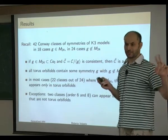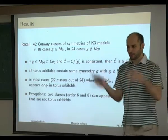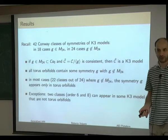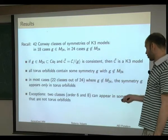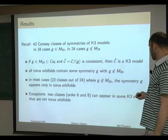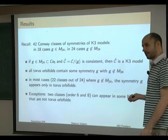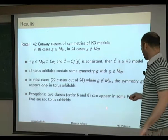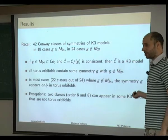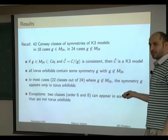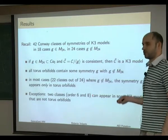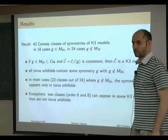The quantum symmetry of a torus orbifold, when orbifolded, must give back the torus; and any symmetry whose orbifold is a torus cannot be in M24. So all torus orbifolds are exceptional. Of the 24 classes not in M24, in 22 of them the symmetry G appears only in torus orbifolds — so most exceptional models correspond to torus orbifolds.